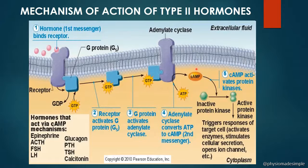Cyclic AMP is the second messenger. The hormone sends the message through the second messenger system. Type 1 hormones act directly inside the cell, while Type 2 hormones act via second messengers. This is the mechanism of action of Type 2 hormones.